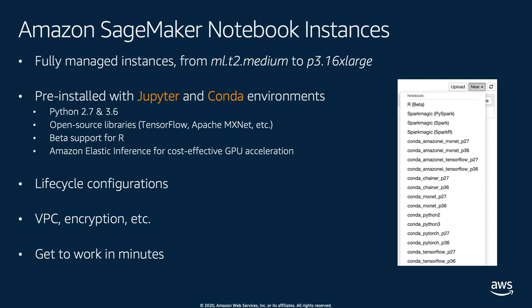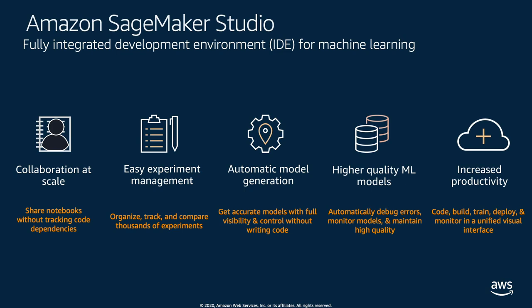Notebook instances come pre-installed with all the tools you need: Python, open-source libraries like TensorFlow, PyTorch, Scikit-Learn, MXNet, and beta support for R. You can experiment using data stored in S3 and use any AWS SDK. Because security is important, you can run those inside virtual private clouds, encrypt local storage, deny internet access, etc. You can really lock down the security configuration of those instances, and it takes just a couple of minutes to create one.